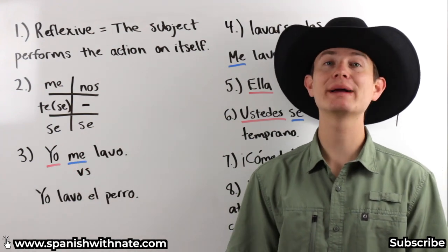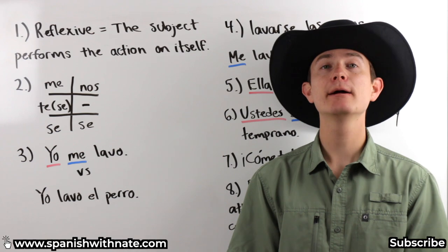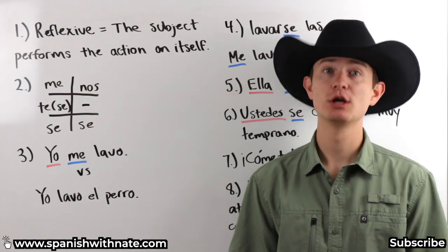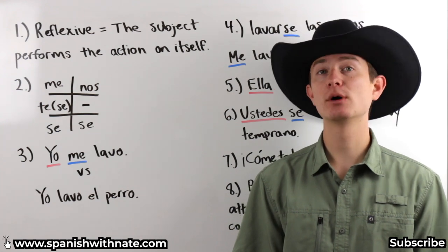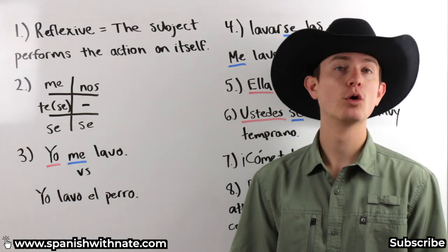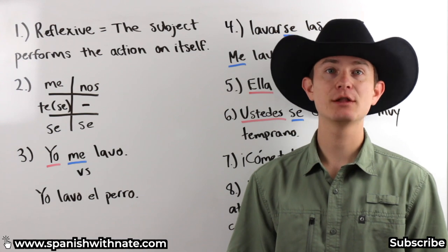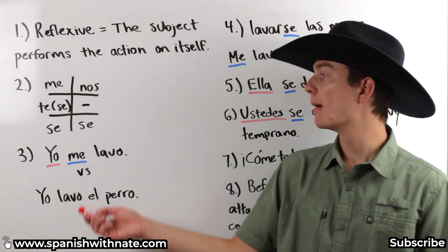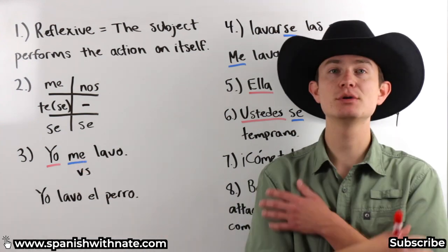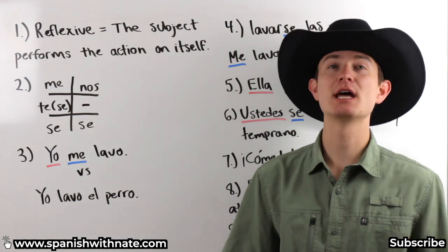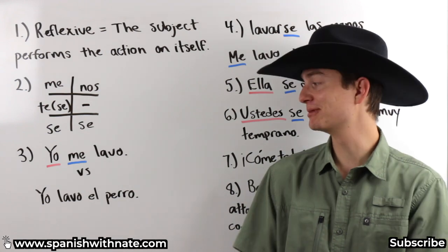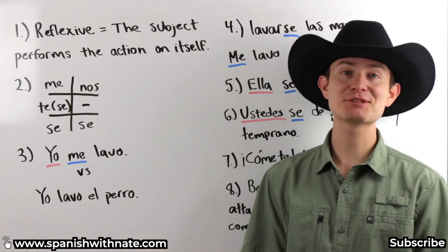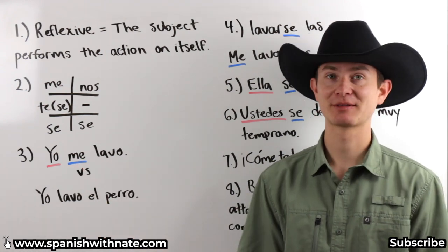So for example, I could be washing el perro, the dog. So when I add this little word, this reflexive pronoun, me, for the yo person, it becomes I wash myself. So you can't say yo lavo. If you want to say I'm going to shower, you wouldn't say voy a duchar. Duchar is the verb to shower. You wouldn't say voy a duchar. You would say voy a ducharme, or me voy a duchar.